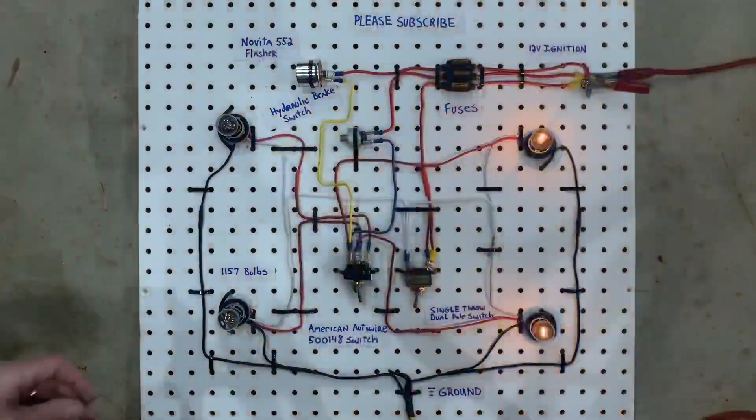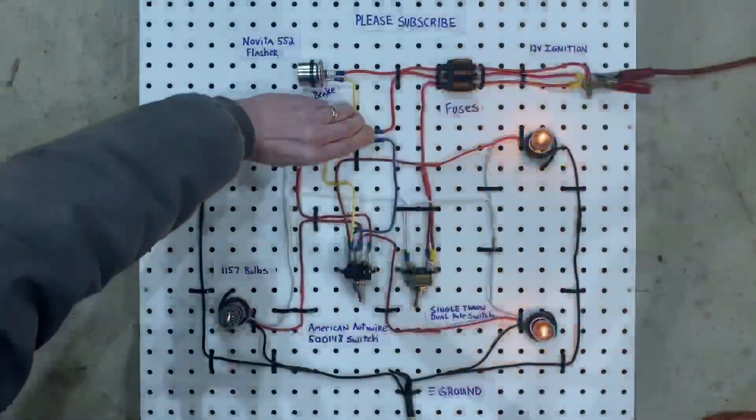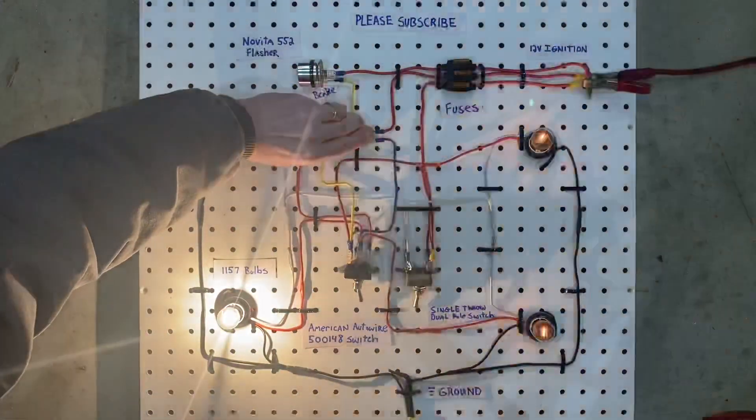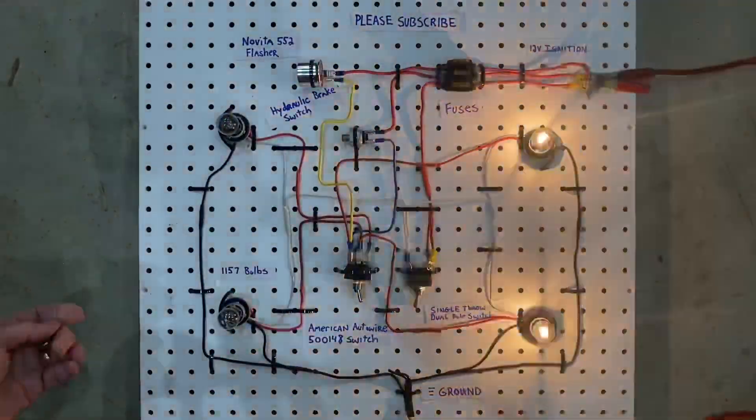So right now, we have the right directionals on. Now we're going to turn on the brakes, and you can see the left rear brake light turned on, but the right one kept blinking. And that's the way the directionals should work.